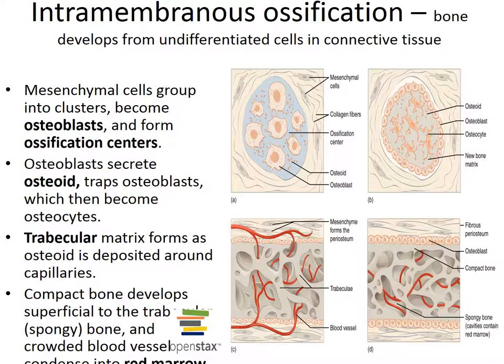The next step is formation of the compact bone plate. Initially the intramembranous bone consists of spongy bone only. Subsequent remodeling around trapped blood vessels can produce osteons typical of compact bone. As growth slows at the surface, the connective tissue around the bone becomes organized into the fibrous layer of the periosteum.